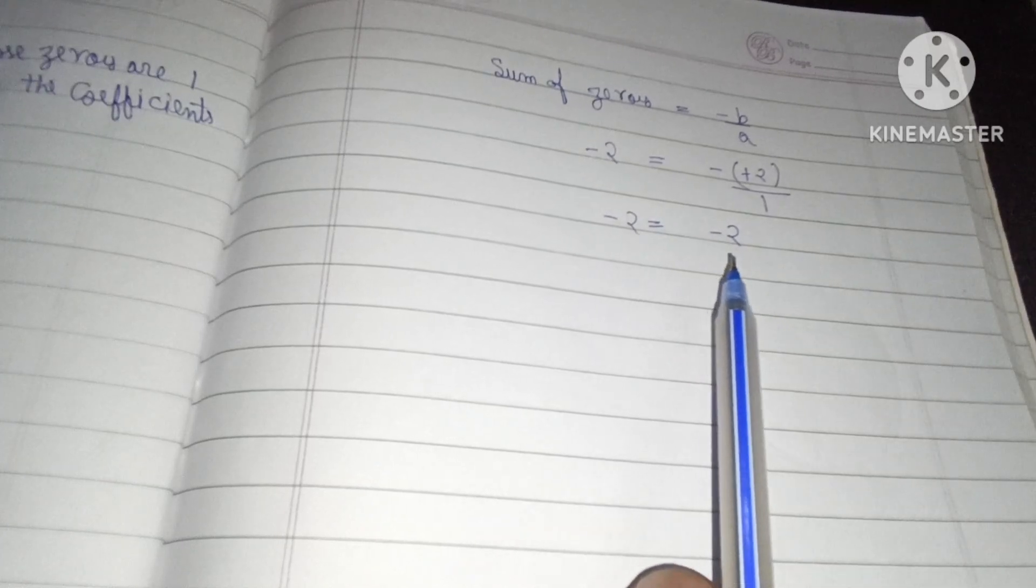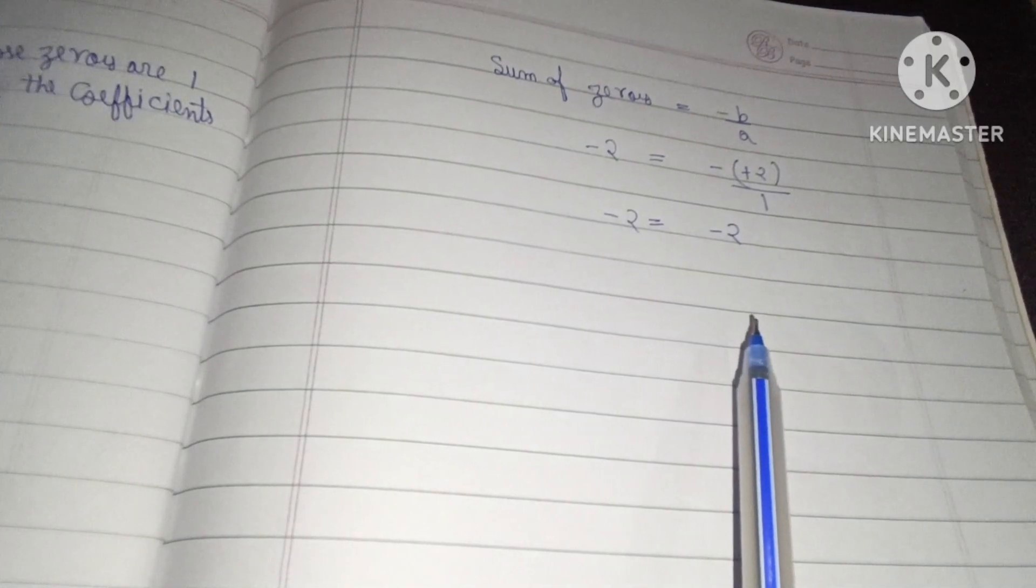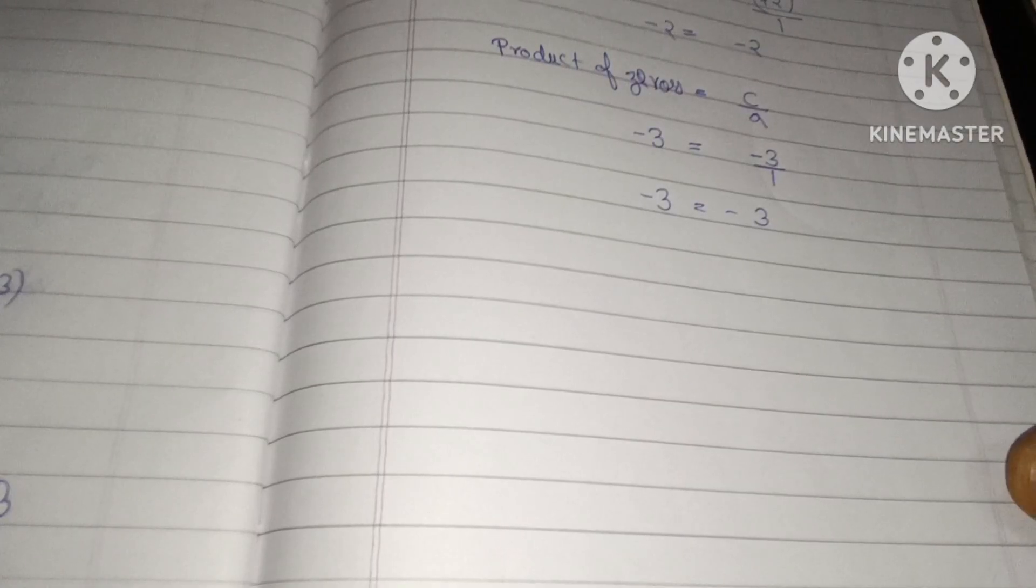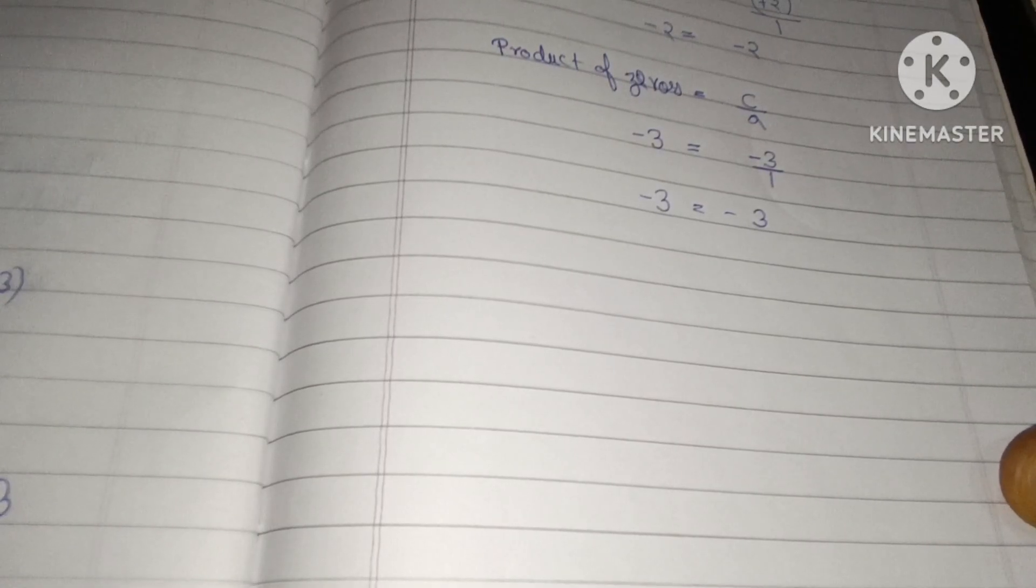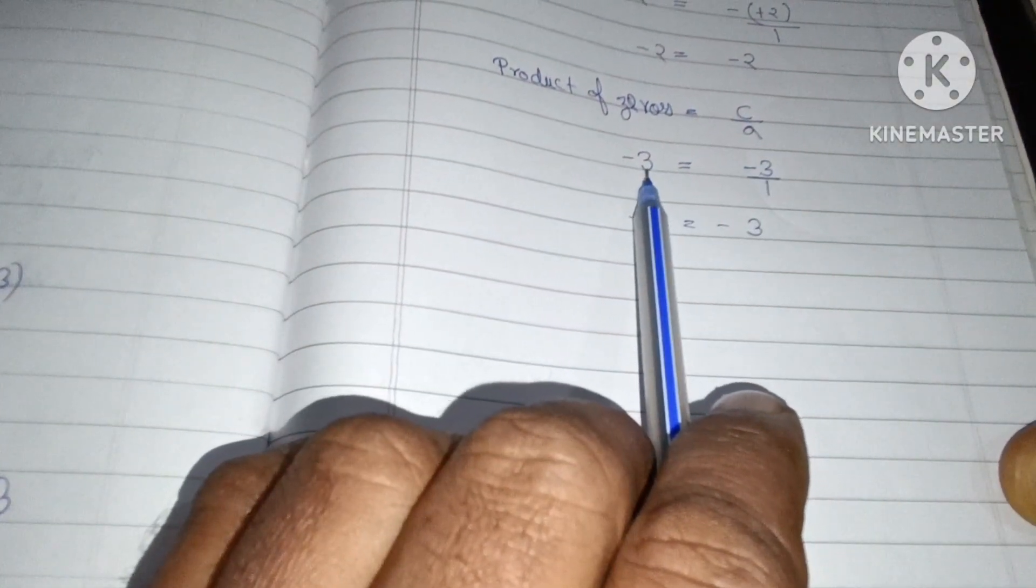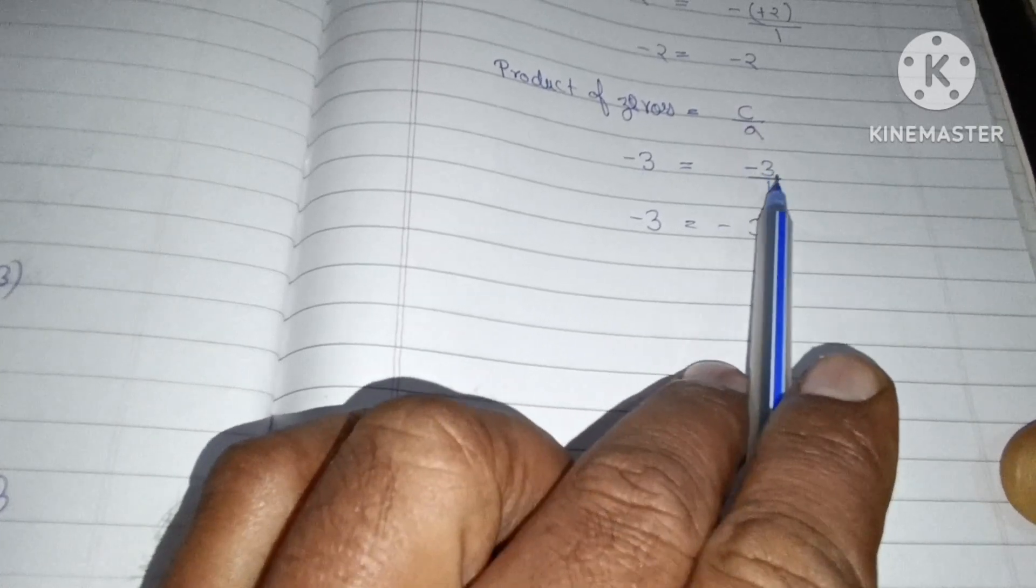Idhar hai product of zeros. Product of zeros equal to hoga c upon a. Product of zeros ne find kiya tha minus 3, aur c hai hamara yahan minus 3 upon 1.